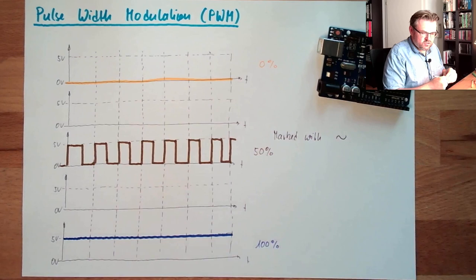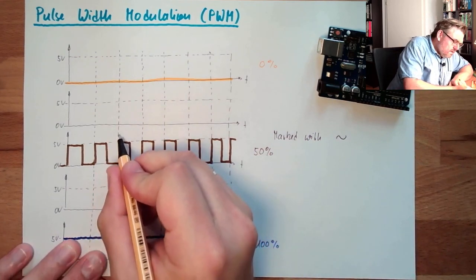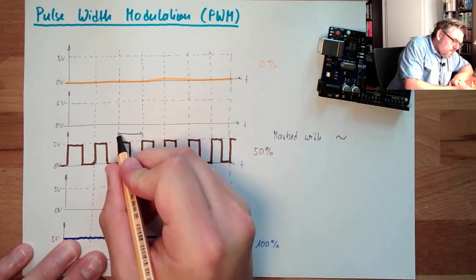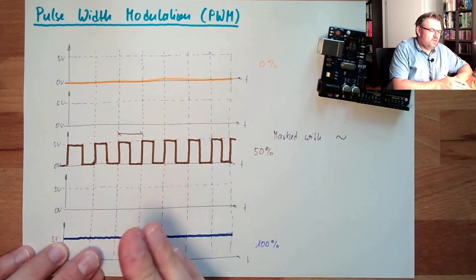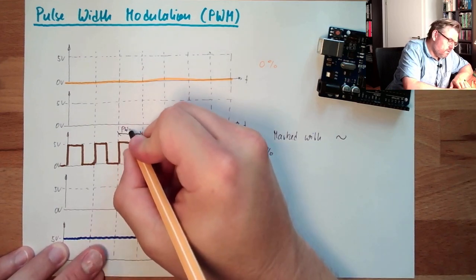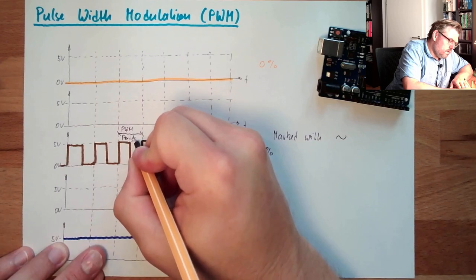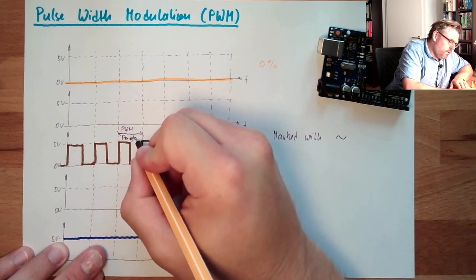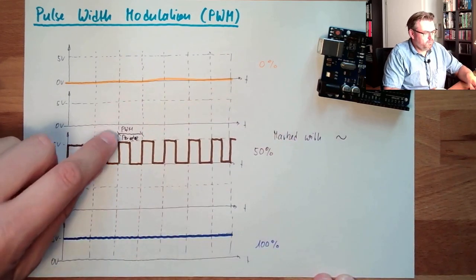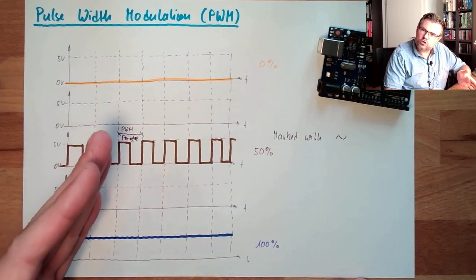There is a certain frequency here. This is the periodic, the period, PWM period. This is constant.